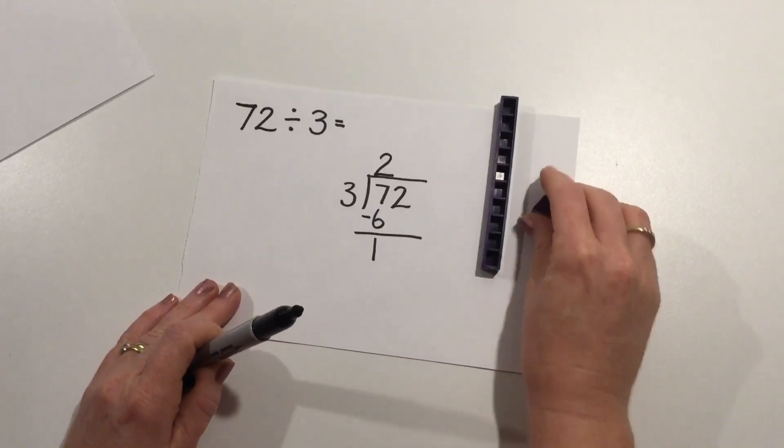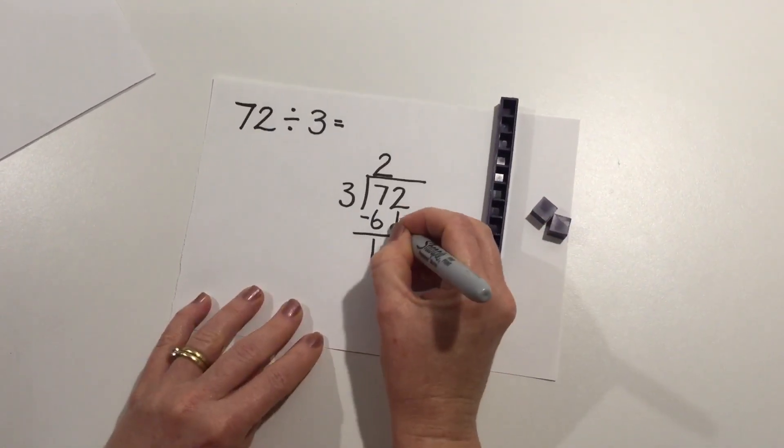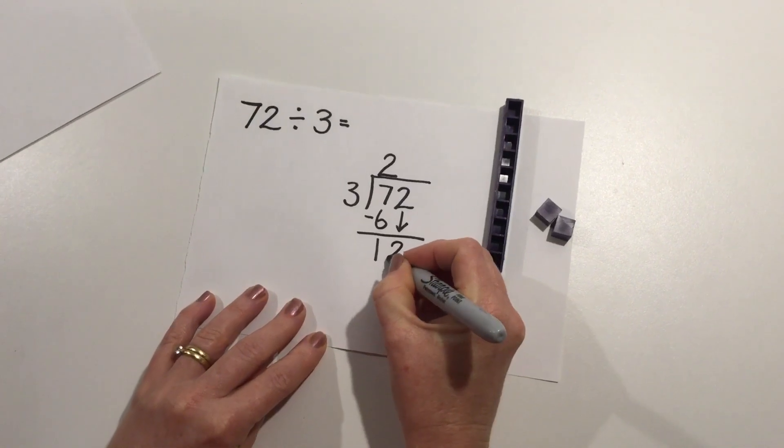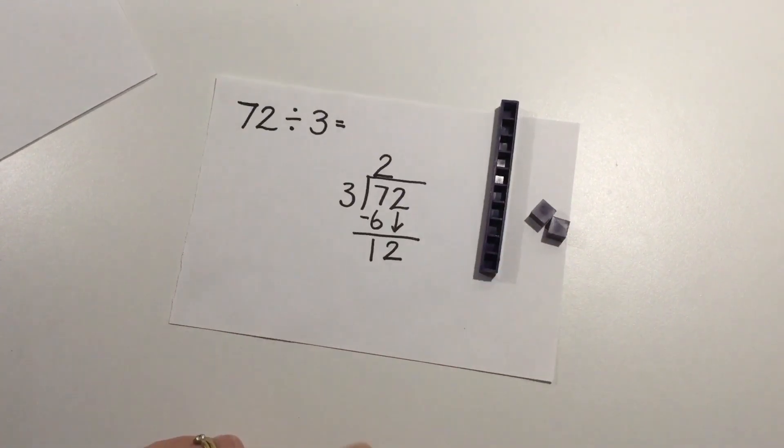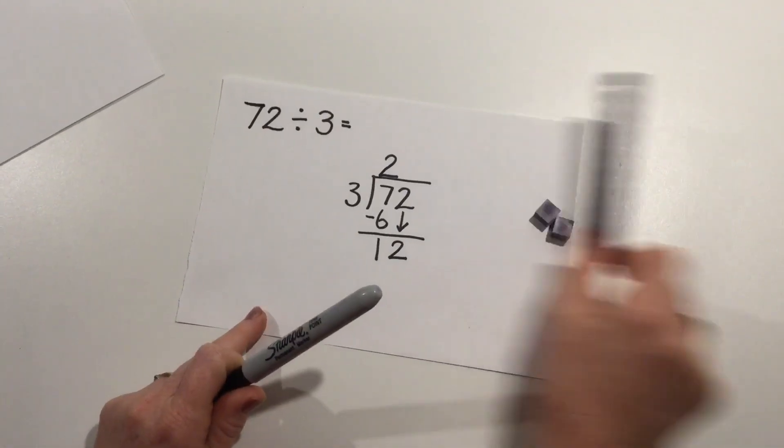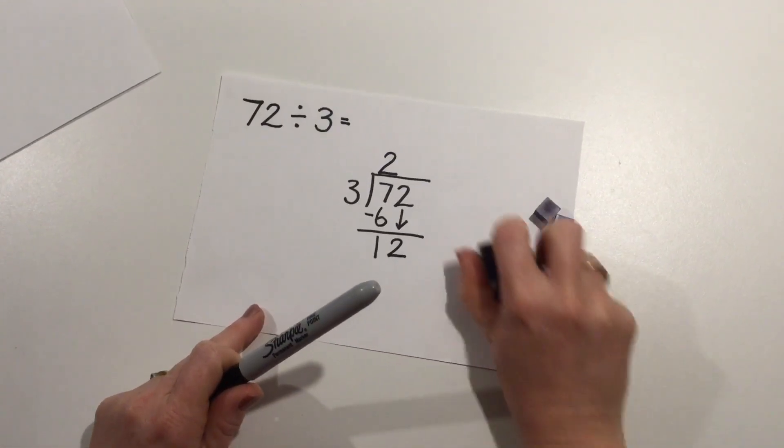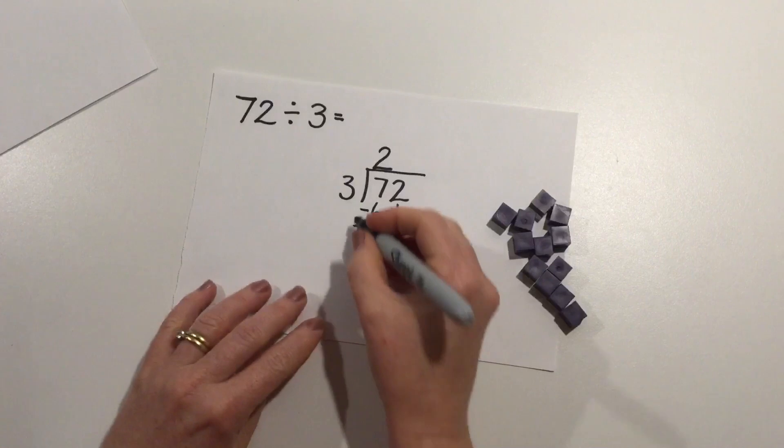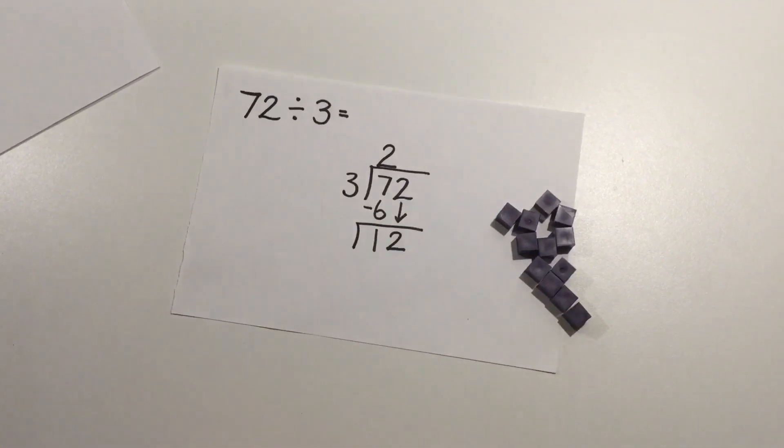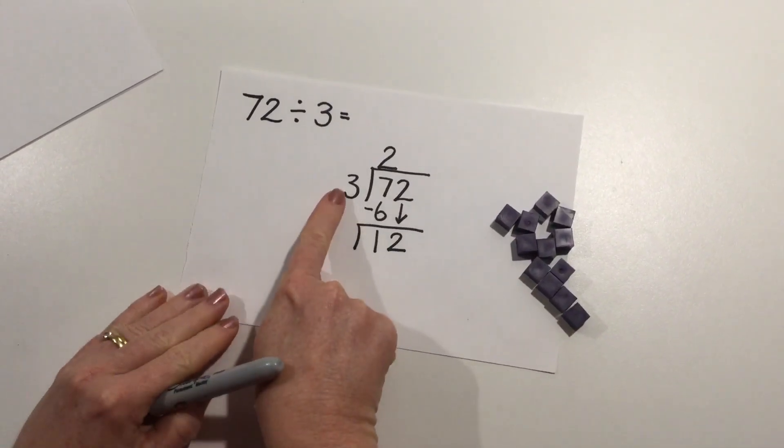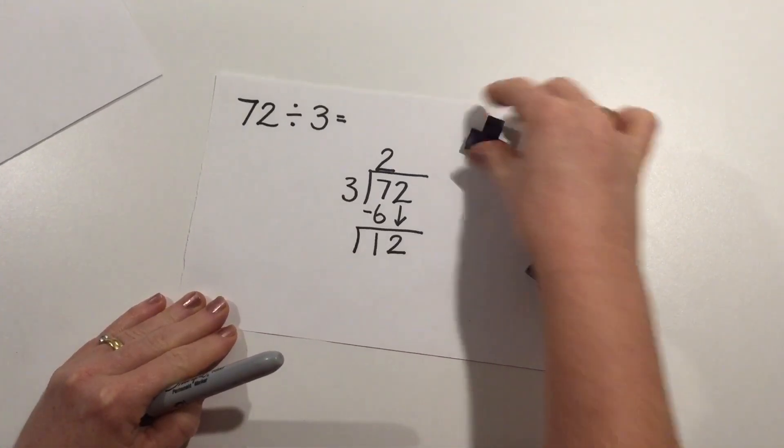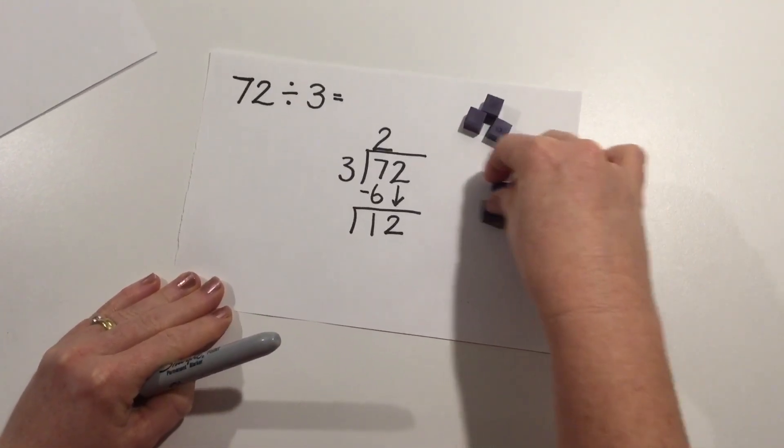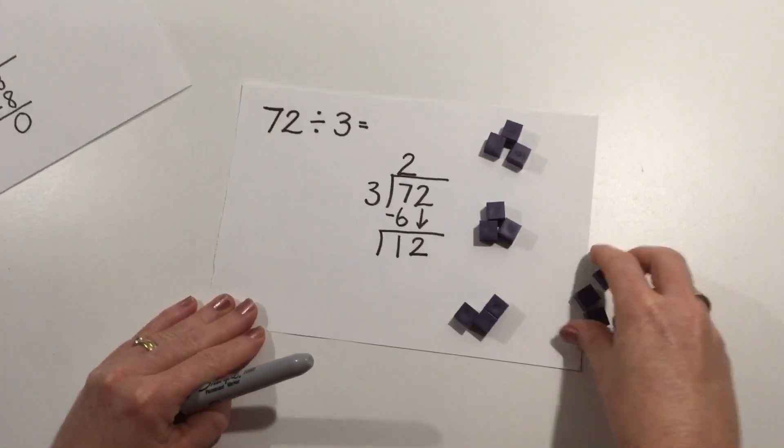So if I now bring down my ones I can see that I have 1 ten and 2 ones. I'm going to exchange this 10 for 10 ones and I start the process over again. How many groups of 3 are there in 12? 3, 6, 9, 12.